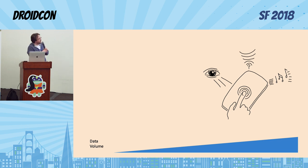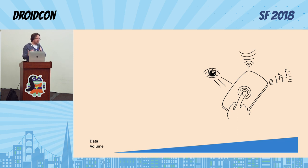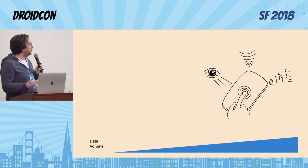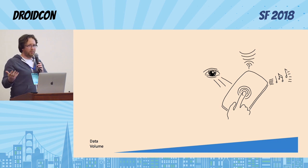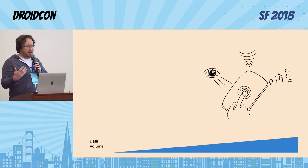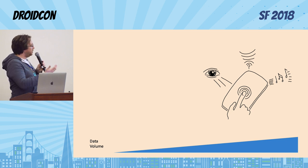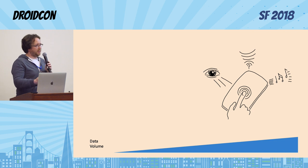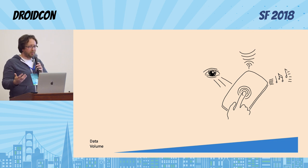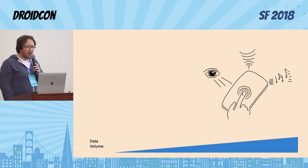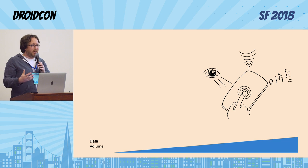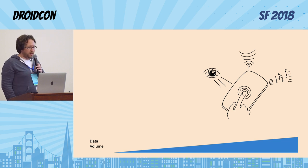The five areas are: what the user sees on the screen; what the user hears; what the user says into the device, which is becoming more important as voice interfaces become more common; the cell and Wi-Fi networks that the device sees; the user input — how the user is actually touching and interacting with the device; and what's happening inside the device in the GPU and the CPU.